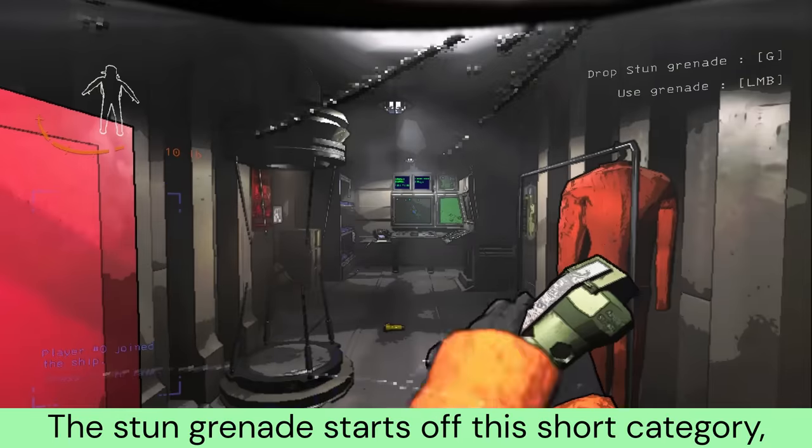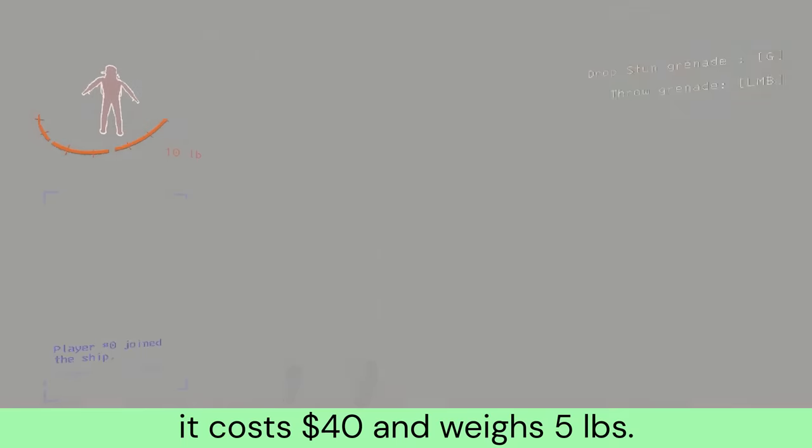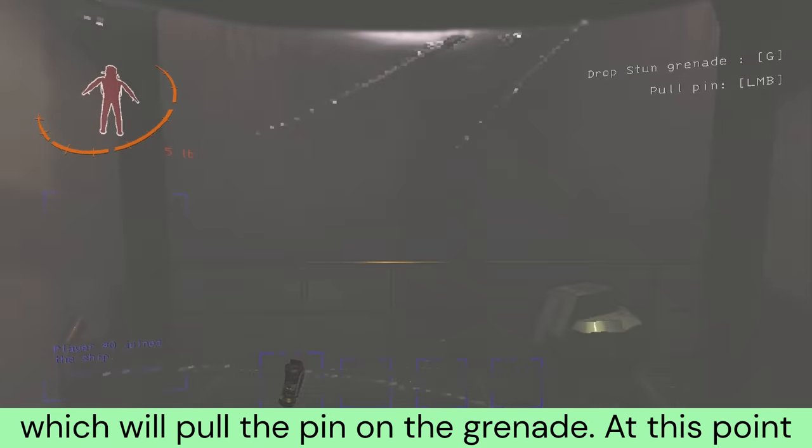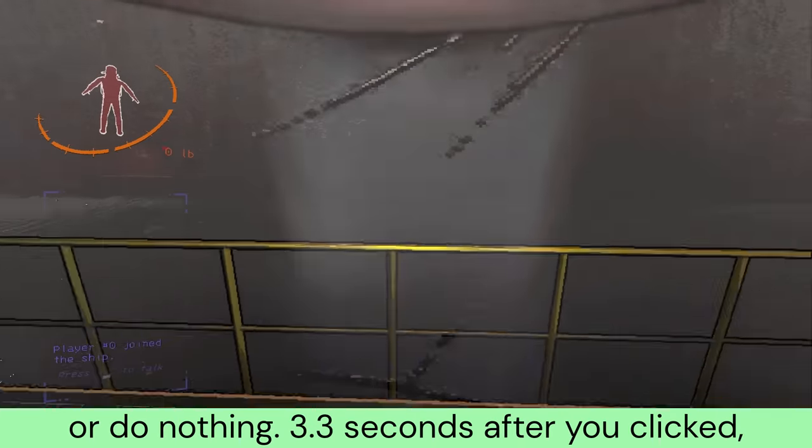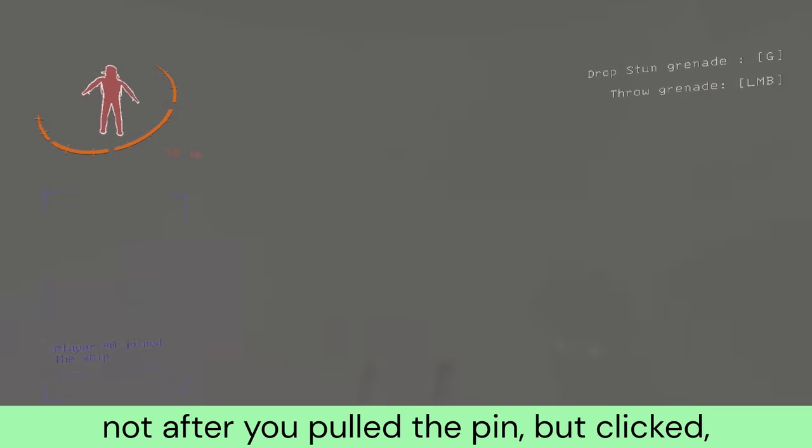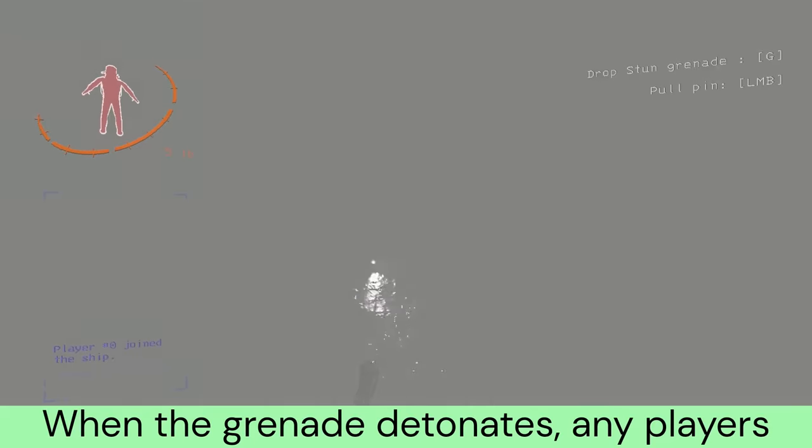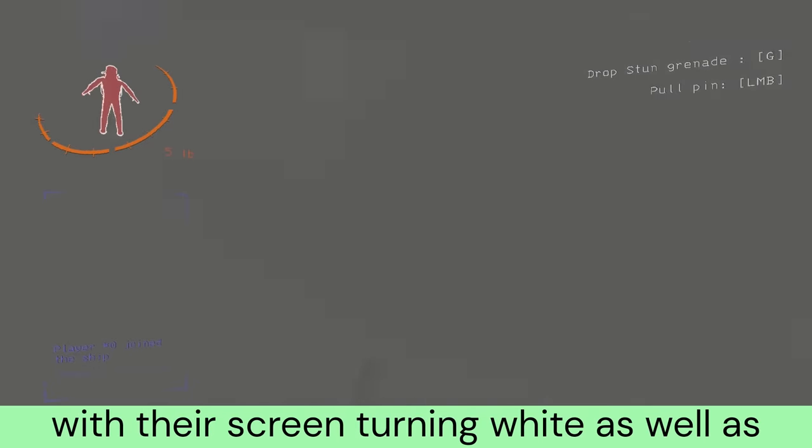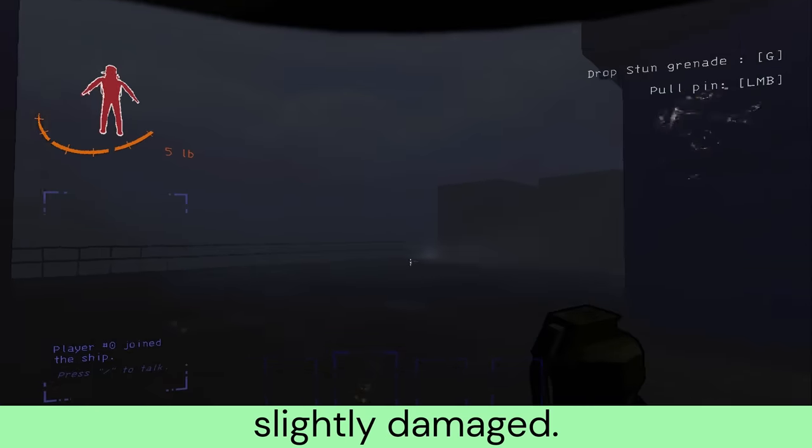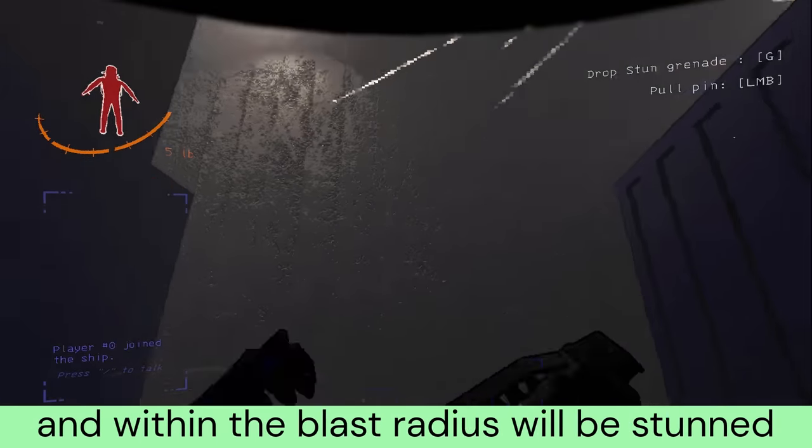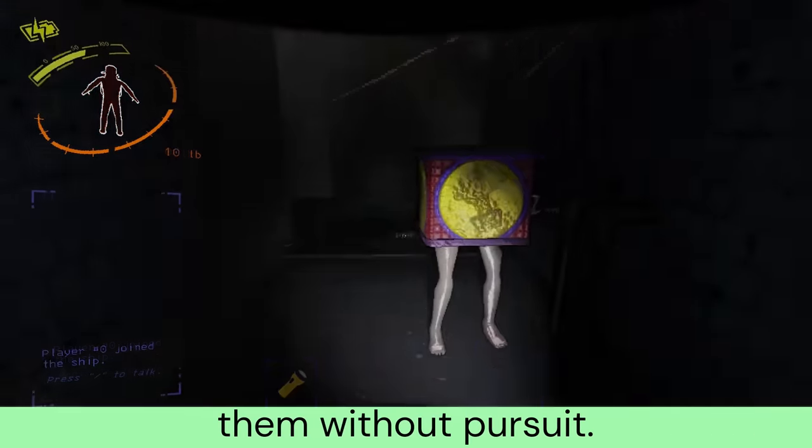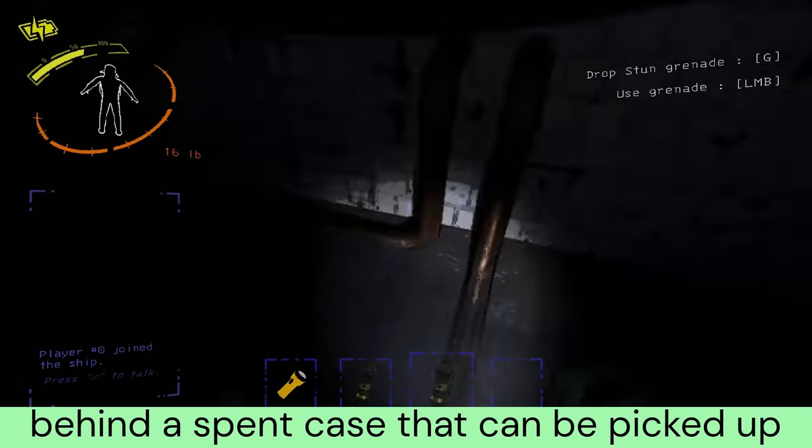The stun grenade starts off this short category. It costs $40, and weighs 5 pounds. It can be used by clicking the left mouse button, which will pull the pin on the grenade. At this point you can click again to throw it a short distance. 3.3 seconds after you clicked, the grenade will detonate. When the grenade detonates, any players near it will be affected by getting blinded with their screen turning white, as well as being deafened. Enemies that are able to be stunned, and within the blast radius, will be stunned for a short duration.